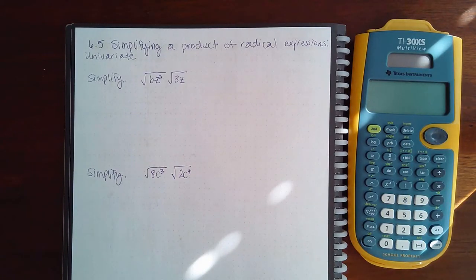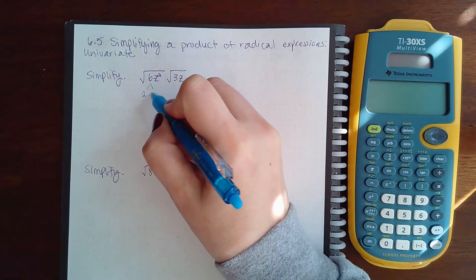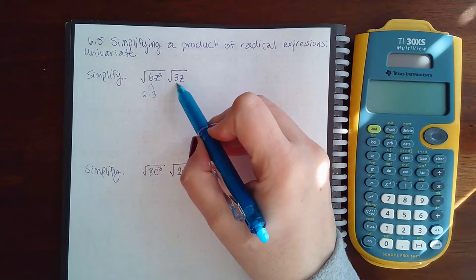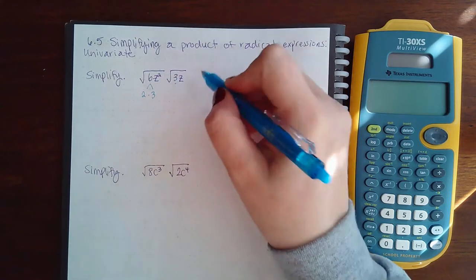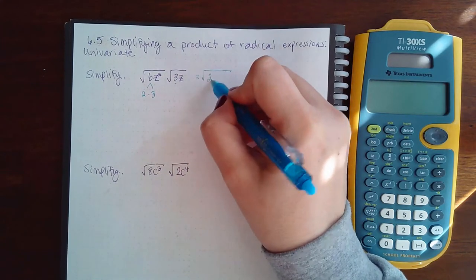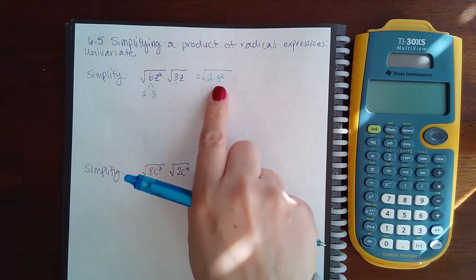6.5 simplifying a product of radical expressions, univariant. We're going to do the same thing again. This is 2 times 3, already in its prime factorization. If I multiply them together I'm going to have that 2, but then I'm going to have 3 squared. This 3 and this 3 are going to make the 3 squared.